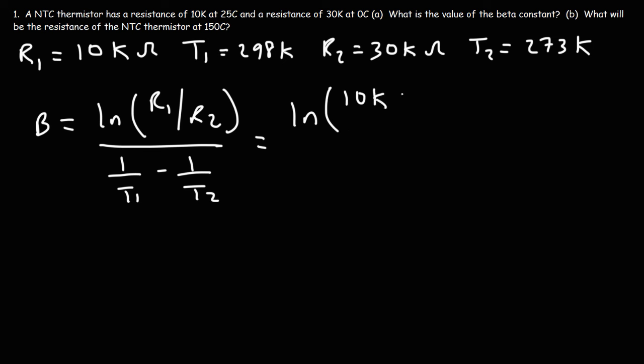So that's basically it for this video. Now you know how to calculate the resistance of an NTC thermistor at different temperatures. First, determine the beta constant by knowing two different resistances at two different temperatures. Once you have the beta constant, you can calculate the new resistance at different temperatures in Kelvin. Thanks for watching.